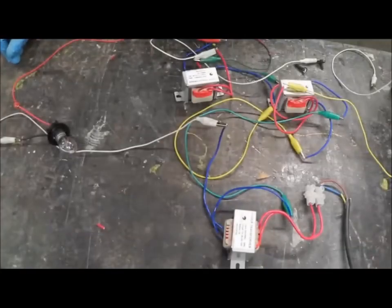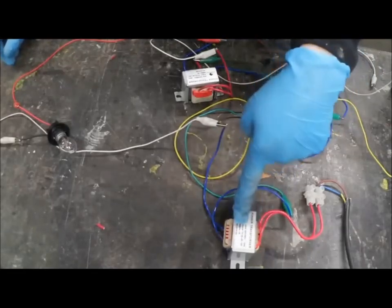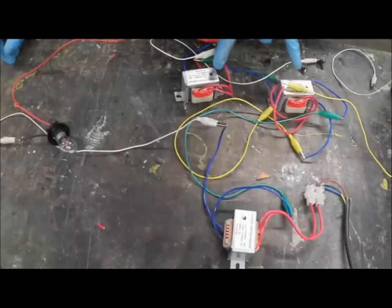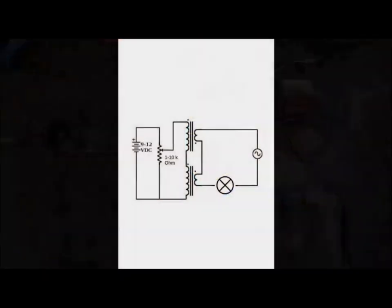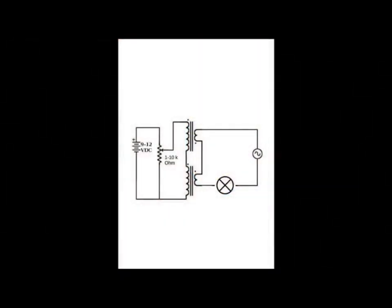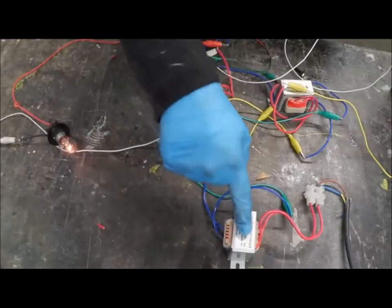Here's what it looks like in reality — three transformers, with one as my 12-volt supply and the others as my control. The circuit is all laid out: the supply, the controlling transformers, the light, and a resistor. If I adjust that resistor, I can control the light.